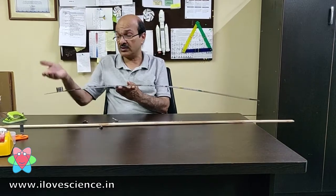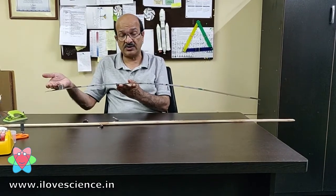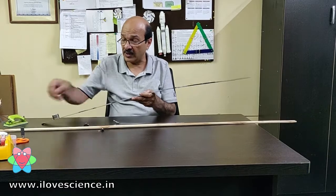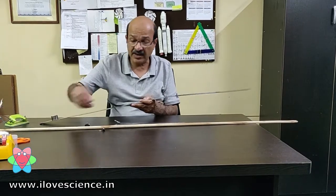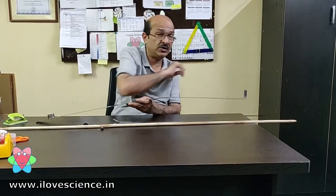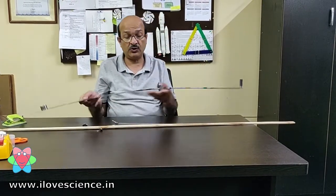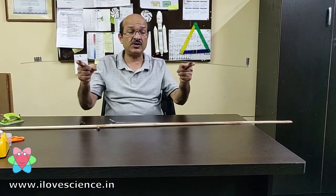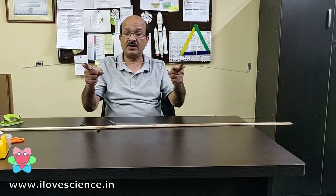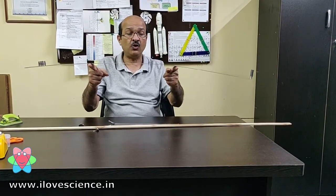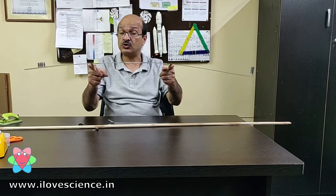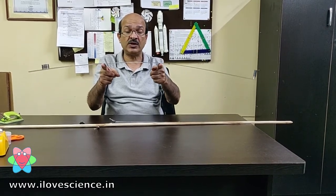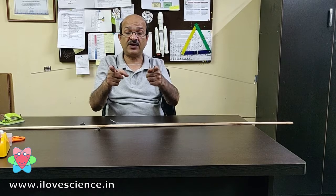This is the new center of gravity of this scale — I am able to balance it from here. It has shifted because it is heavier on this side. Now suppose we make it more complex and add some weight on this side also. We don't know where the center of gravity is again, but we can do the same method.